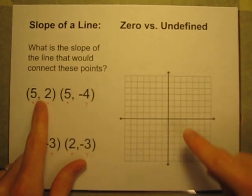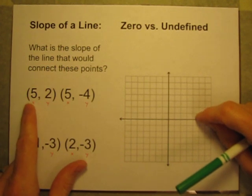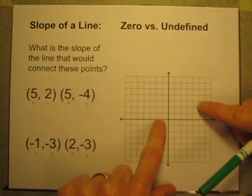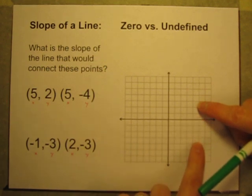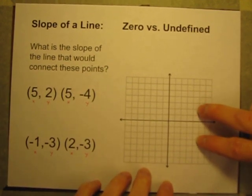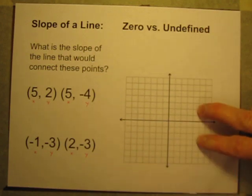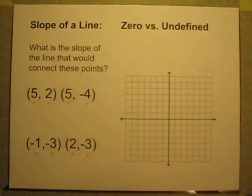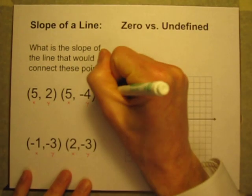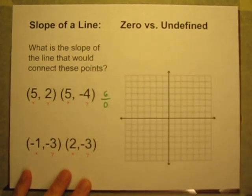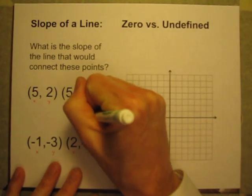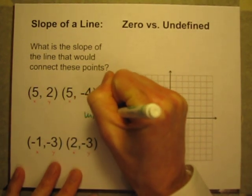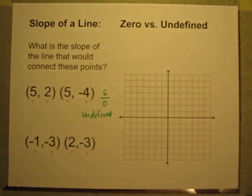I'm not actually going to draw them on here, but the point (5, 2) is 5 to the right up 2. And the point (5, -4) is 5 to the right down 4. So you're going to have two points there and there. It's going up and down, but there's no run. So it looks like your rise is going to be 6. Your run is 0. This one is going to be undefined.